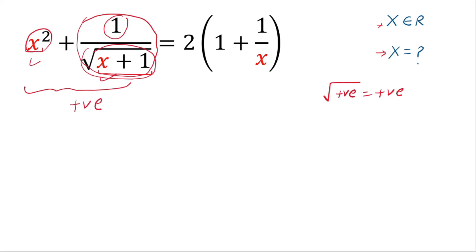If the left hand side is positive, then the right hand side should also be positive. So if the right hand side is positive, we can conclude that the value of x is positive.